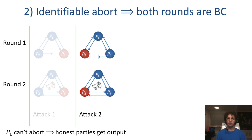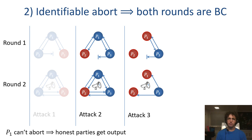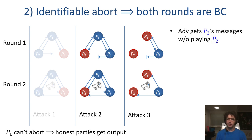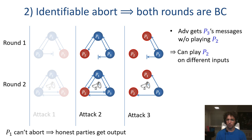Now let's see what an adversary corrupting both party 1 and party 2 can do. The adversary emulates the previous scenario towards party 3: party 1 sends the first-round message but party 2 doesn't. After party 3 sends its second-round message over broadcast, the adversary has received all of party 3's messages without playing party 2. The adversary can then simulate party 2 in its head on two different input bits. By the structure of the function, the adversary will learn both input strings of party 3 — something that cannot be done in an ideal computation of the function.